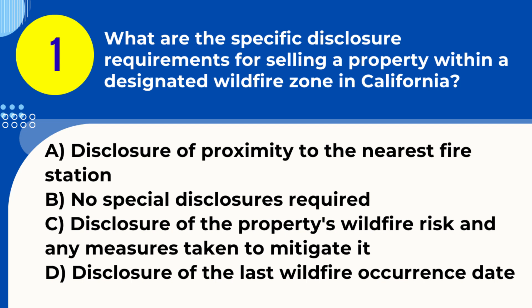Answer: C. Disclosure of the property's wildfire risk and any measures taken to mitigate it. Explanation: In California, sellers must disclose if a property is located in a designated wildfire zone, including the property's specific risk and any mitigation measures taken.